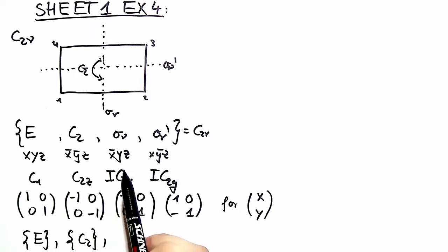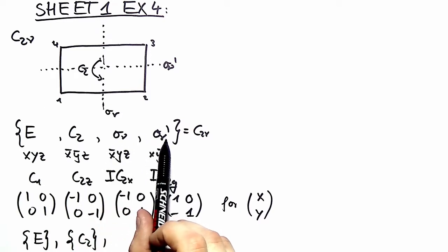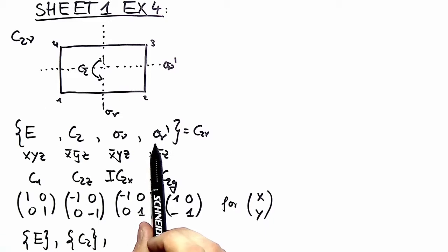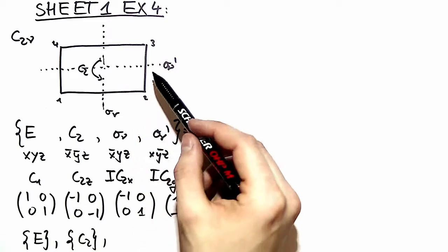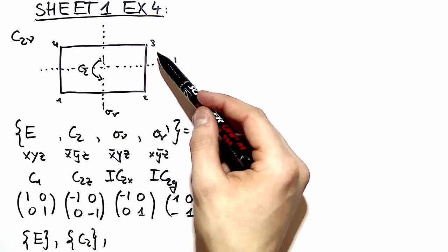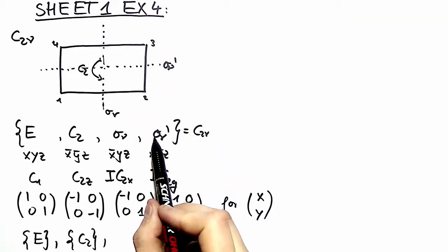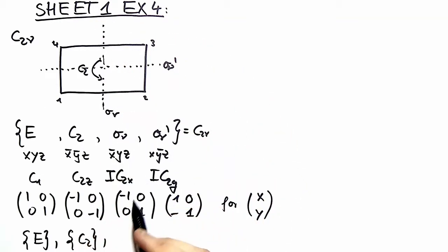And now the remaining question is whether those two mirror planes can be transformed into each other with a symmetry group element. This is of course not the case because we need the C4 element to transform this one into this one or the other way around. So we have different conjugacy classes for both elements.